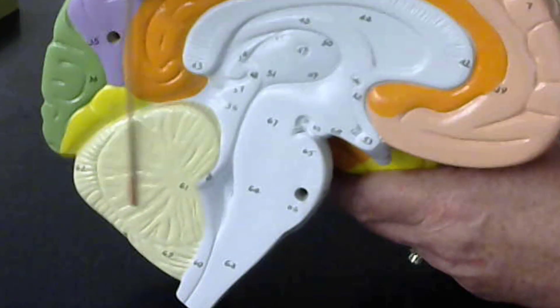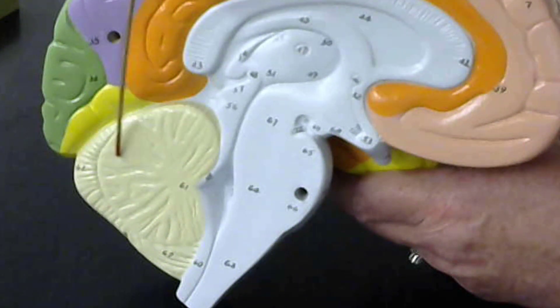This is the cerebellum, and it has been cut open so you can see these branch-like structures, which are the arbor vitae.